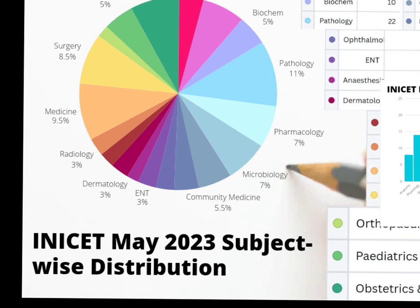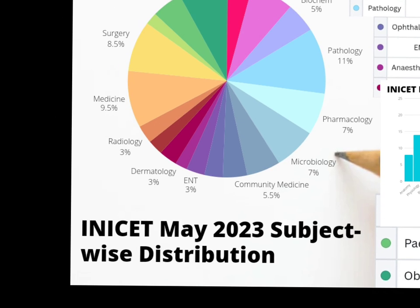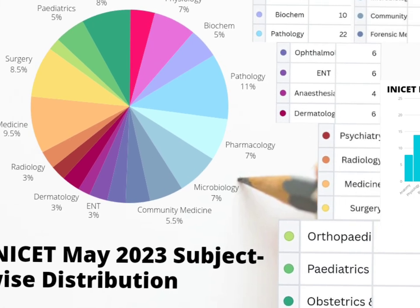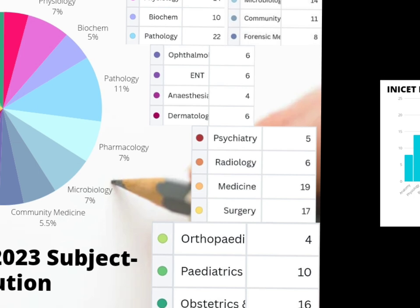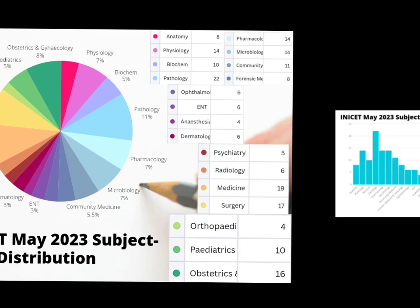In INICAT, the number of questions from community medicine are slightly on the lower side, whereas short subjects like ENT and ophthalmology have not been given a lot of weightage in INICAT. Let me now show you this data in the form of a bar diagram.